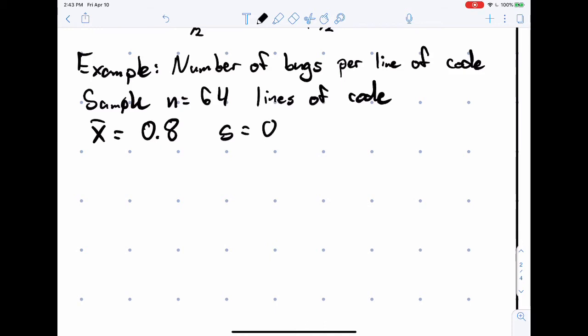And suppose the sample standard deviation s equals 0.1. So that is on average each line in our sample has about 0.8 bugs per line. Okay, this is a fairly pessimistic example but that's alright.